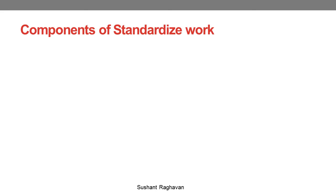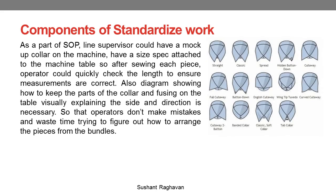As part of the SOP, a line supervisor could have a mock-up collar on the machine. Have a size pack attached to the machine table so that after sewing each piece, the operator can quickly check the length to ensure measurements are correct. Also, a diagram showing how to keep the parts of the collar and fusing on the table — visually explaining the side and direction — is necessary, so that operators don't make mistakes and waste time trying to figure out how to arrange the pieces from the bundles.